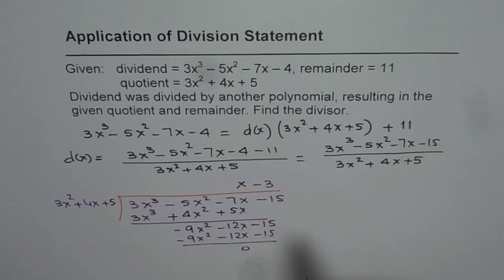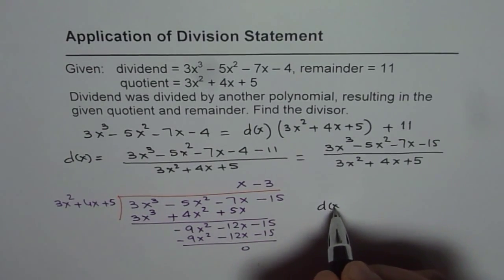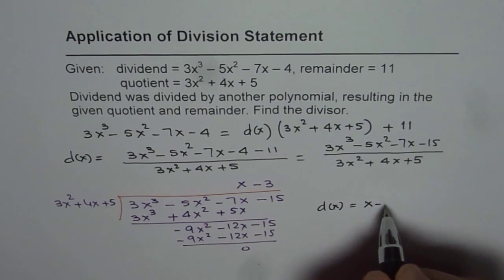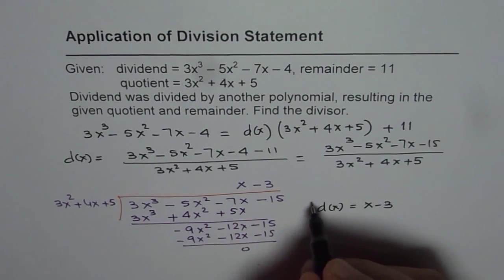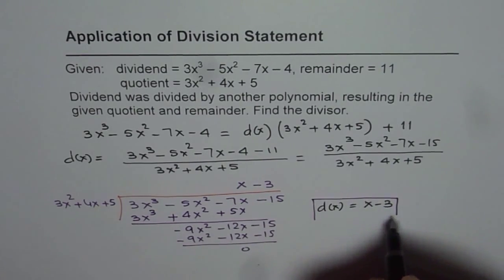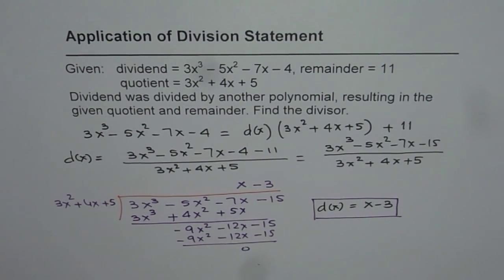So from here, it is very clear that the divisor d of x is equal to x minus 3. So that is our answer. And that is how we should be doing these type of questions. I hope it helps to understand the concept. Thank you and all the best.